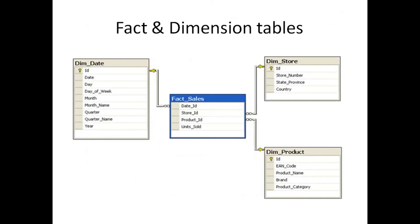In this video, I have explained the primary key and foreign key relationship between dimension tables and fact tables. Here we have three tables: dimension date table, dimension store table, dimension product table, and the fact table. The dimension date table is joined with date ID, dimension store table is joined with store ID, and dimension product is joined with product ID.